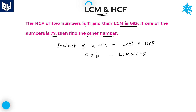Now, out of four variables, LCM of these two numbers is given, HCF of these two numbers is given, and one number A is also mentioned. We need to find the other number B. Substitute all the values in this formula and you will get the value of B easily.